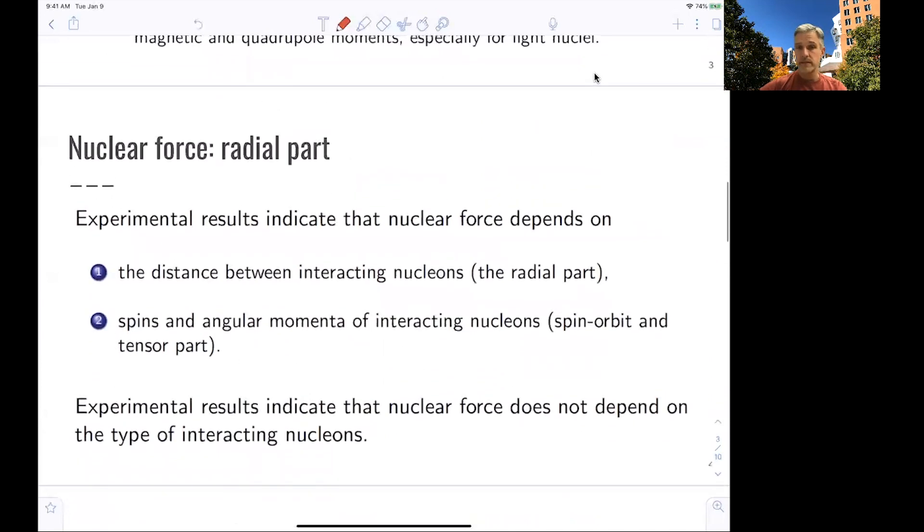The experimental results indicate that the nuclear force depends on the distance between the interacting nucleons. This is the radial part. How far apart are those nucleons? And also the spin and angular momentum of the interacting nucleons. There seems to be a spin orbit and also a tensor part when it comes to the nuclear force.